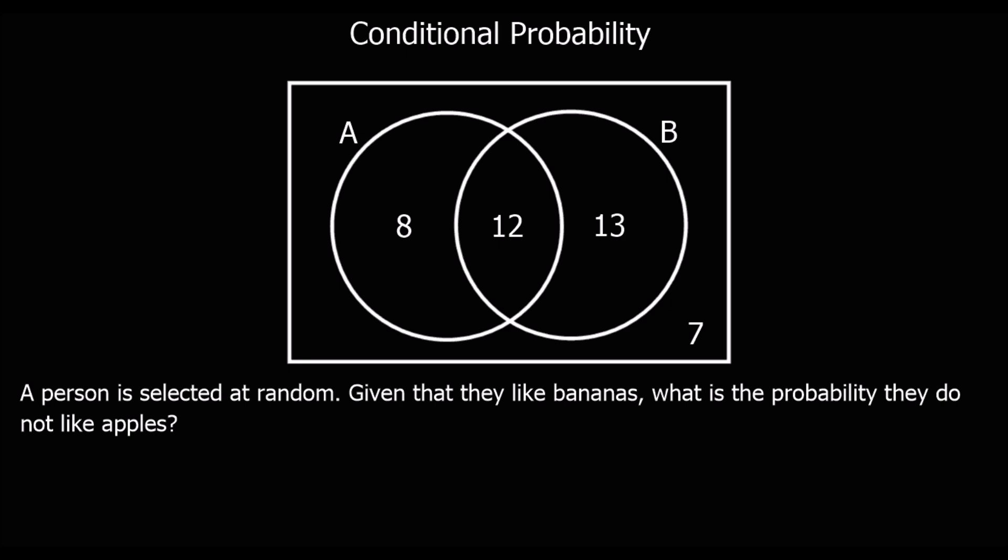So whenever it says given that, that changes what it's out of. Given that they like bananas, so this is the people that like bananas, this circle here. So that's what the whole question's out of now.